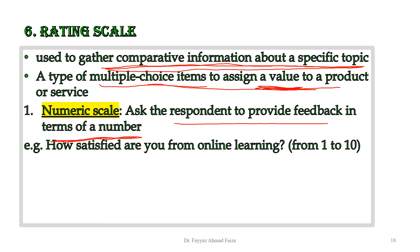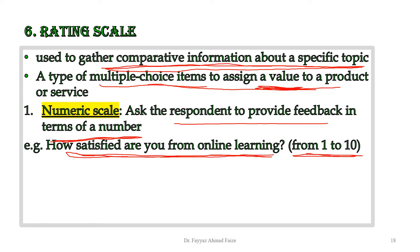For example, if your item is 'How satisfied is the student from online learning?' you are asking the respondent about their satisfaction level, and they can respond on a scale of 1 to 10. This is a numerical rating scale. If the respondent marks 10 or 9, it means the respondent is very satisfied from online learning.